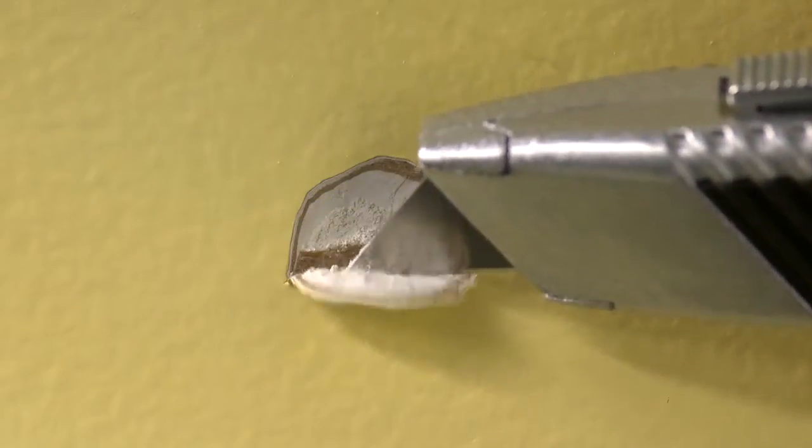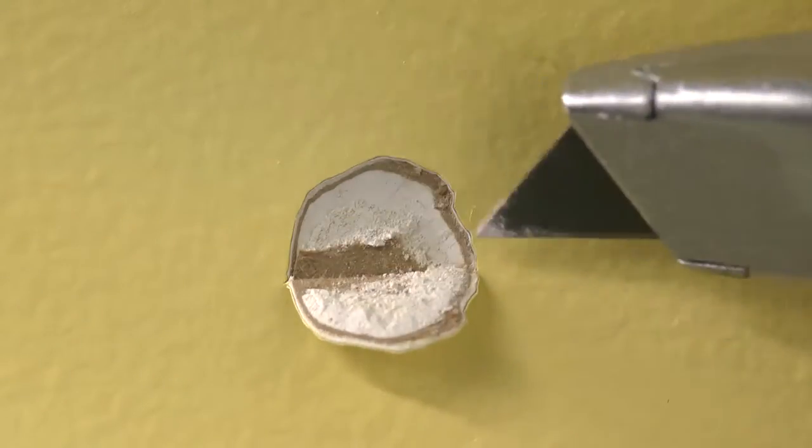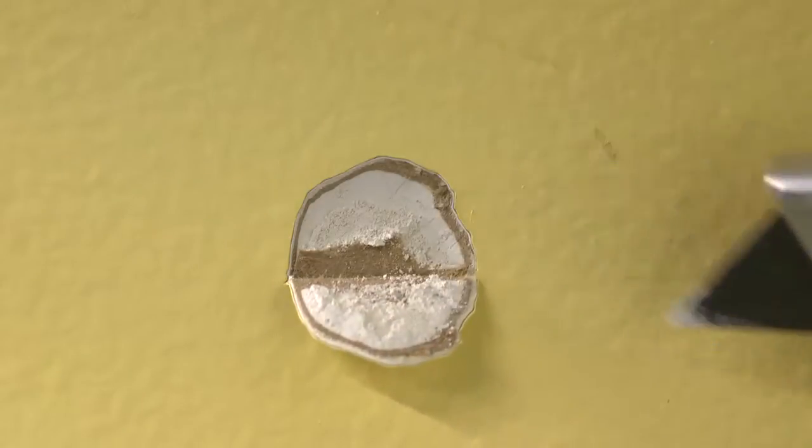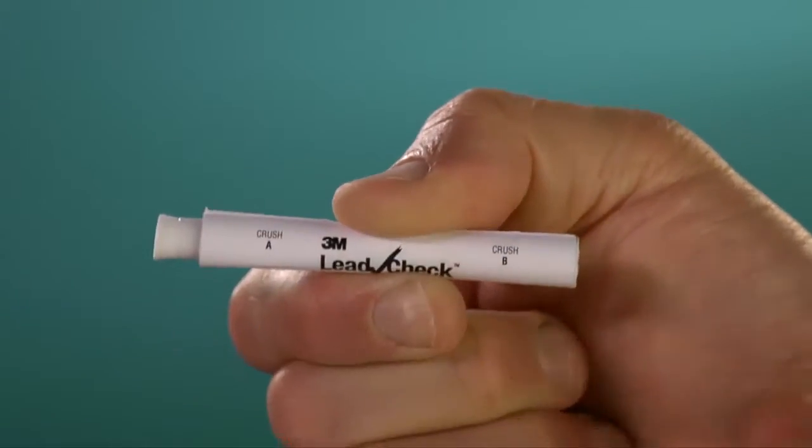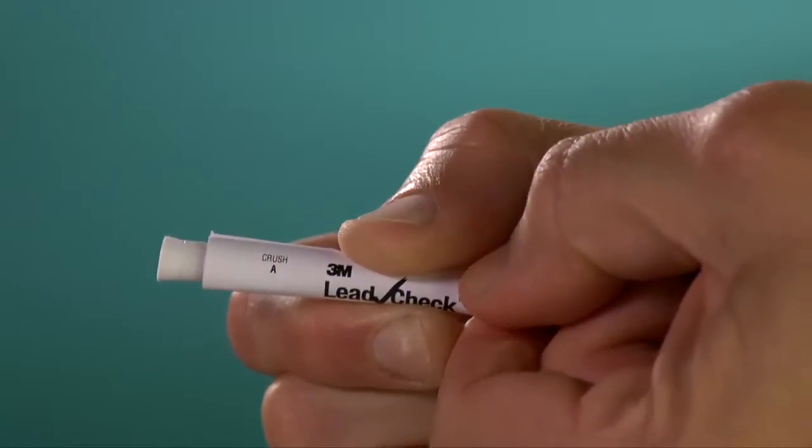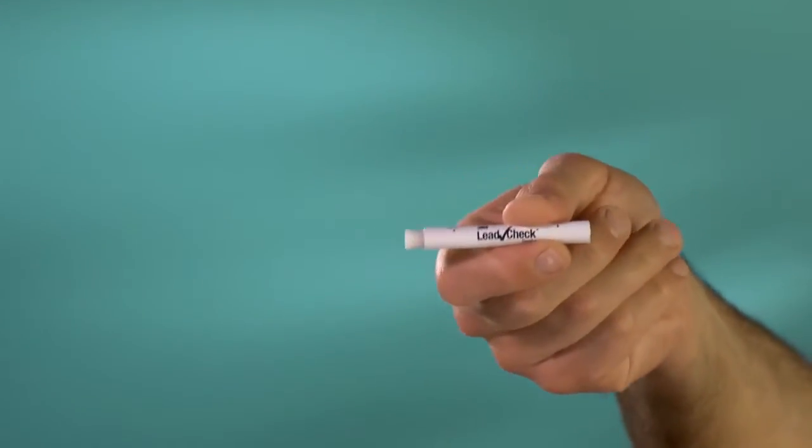Once you have cut through all of the paint layers, use the blade of the knife to fold down the semi-circular flap so that it forms a pocket. Prepare and activate the LeadCheck test swab exactly as described for wood surface testing. Then, test the drywall or plaster area.